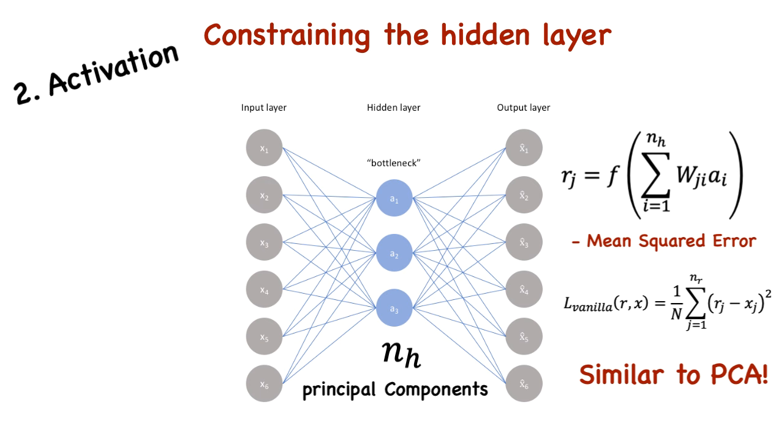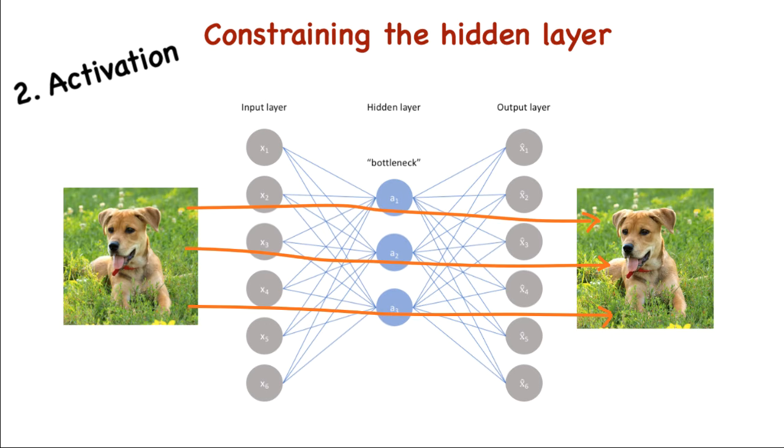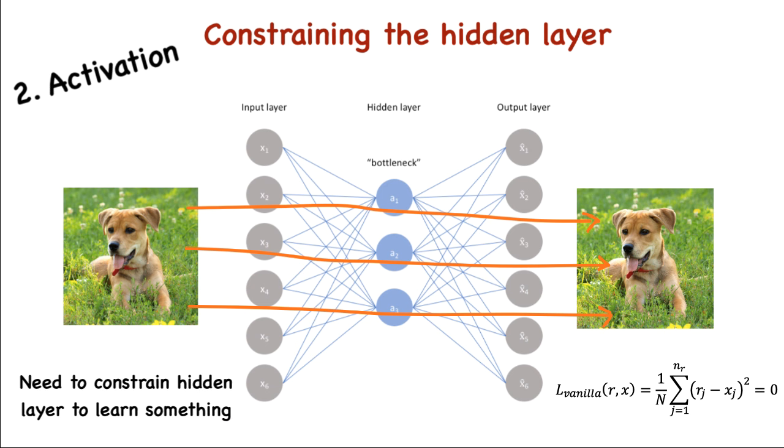But then we come back to the same problem. If H is unconstrained, it will simply copy the input to the output as that leads to a zero loss. We need to make sure that H is restrained to an extent for learning. It is important to remember that we aren't too concerned about the output of the decoder, but more of the latent representation that the autoencoder learns.